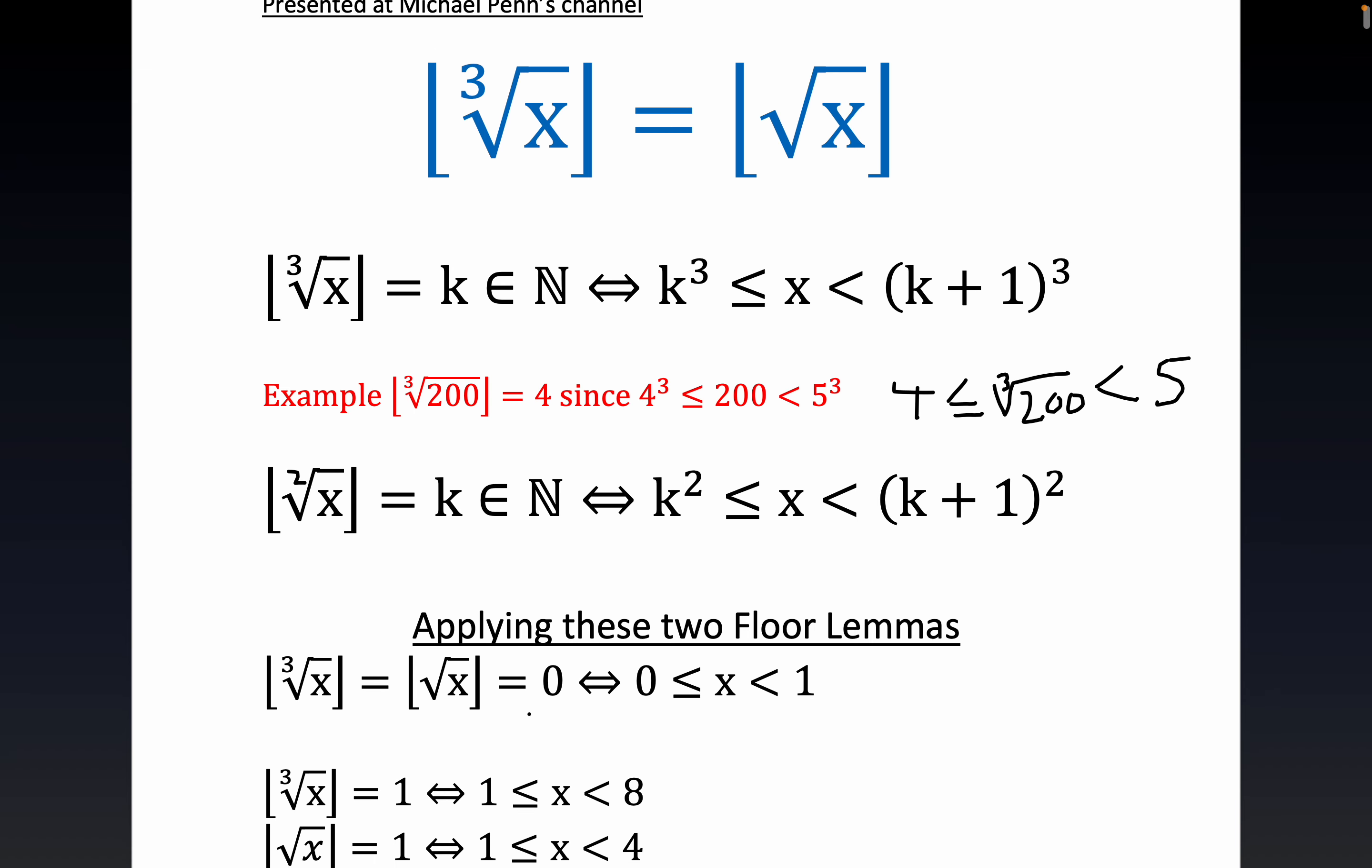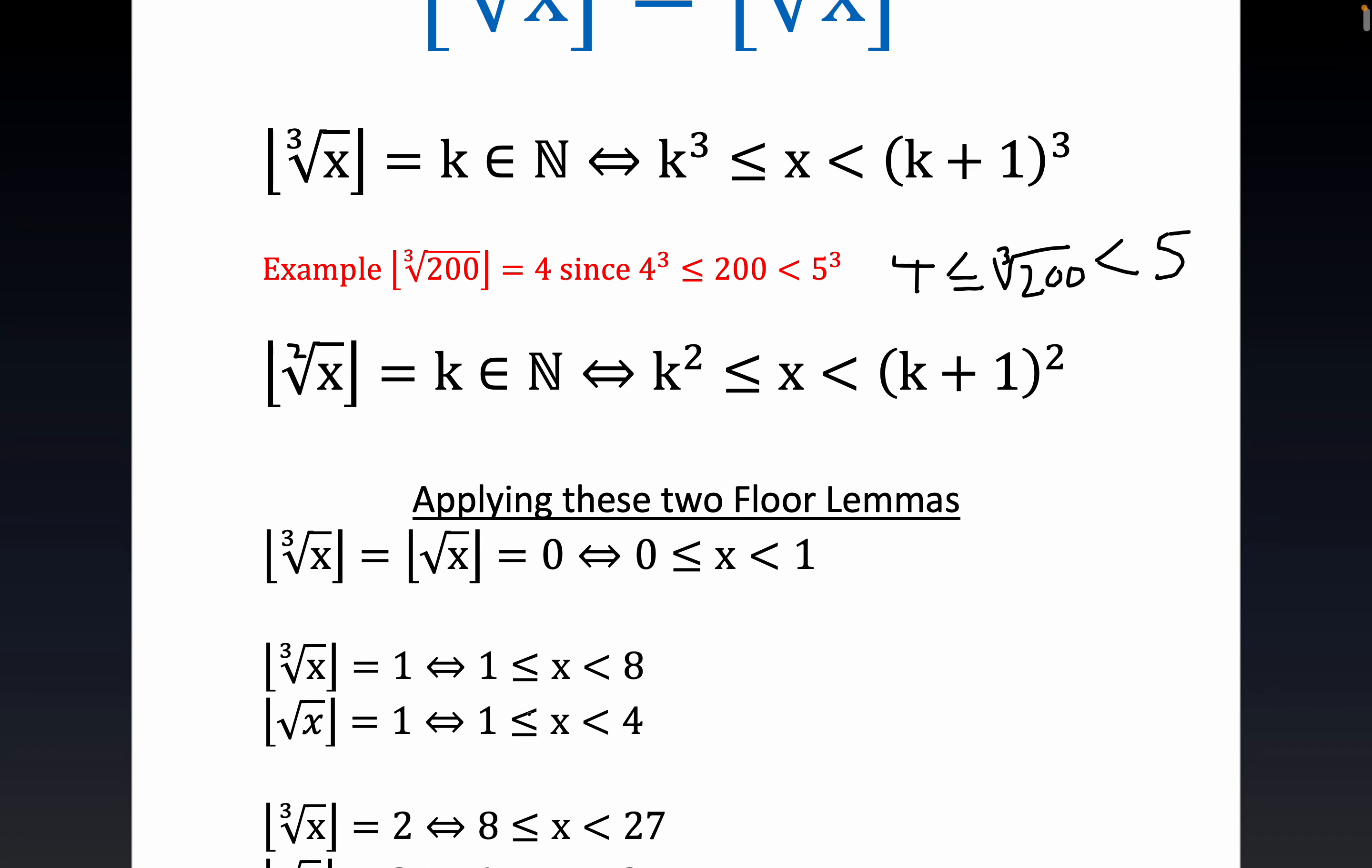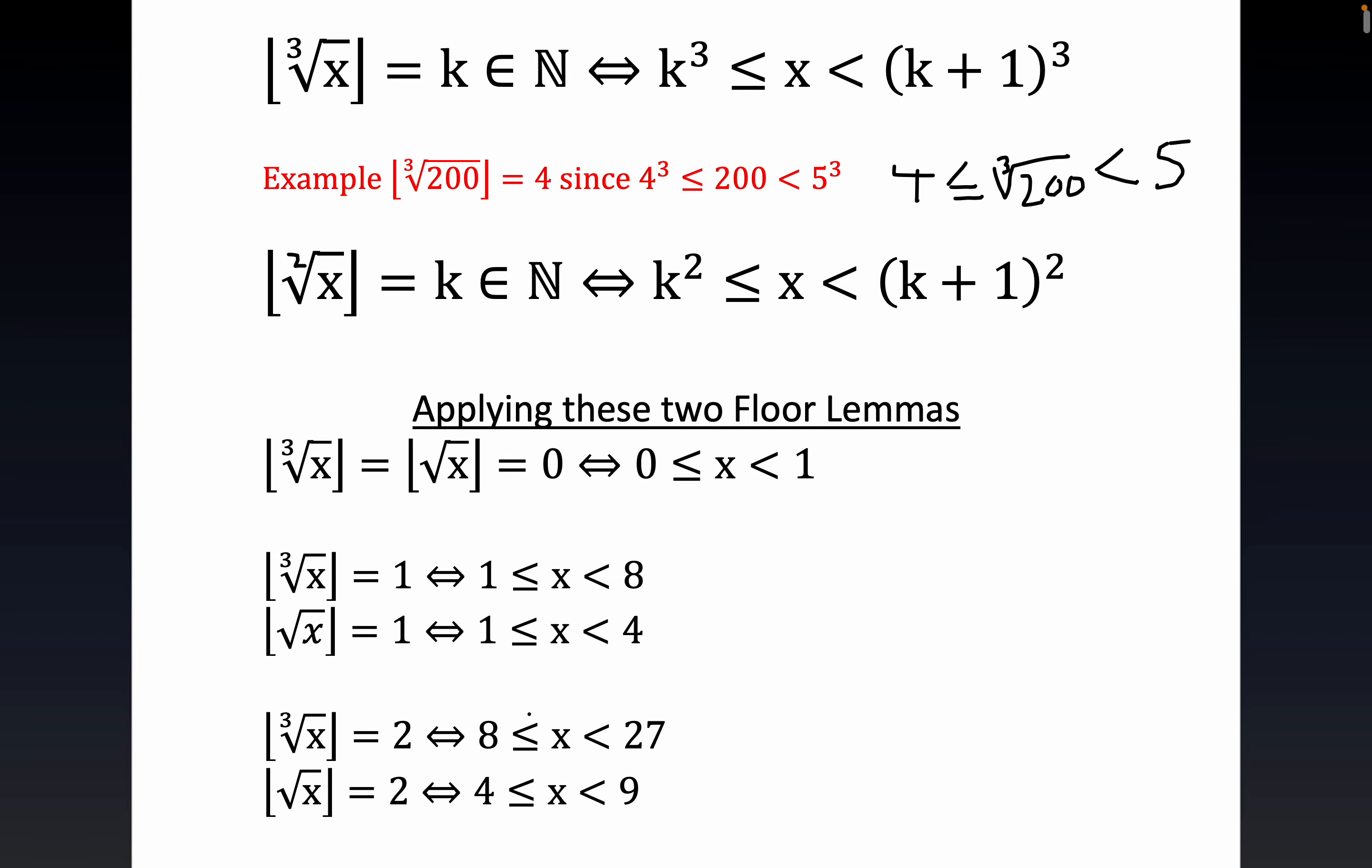Now, the rest of it's very straightforward. This is obvious without even looking at the lemmas. The only way the cube root of X and the square root of X could have a floor of zero would be if X were trapped between zero and one. Again, the cube root of a number between zero and one is still a number between zero and one. So you're going to have a floor of zero.